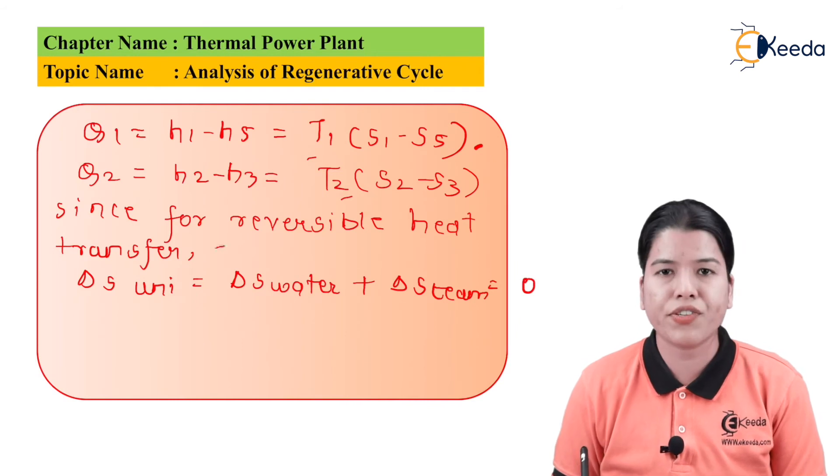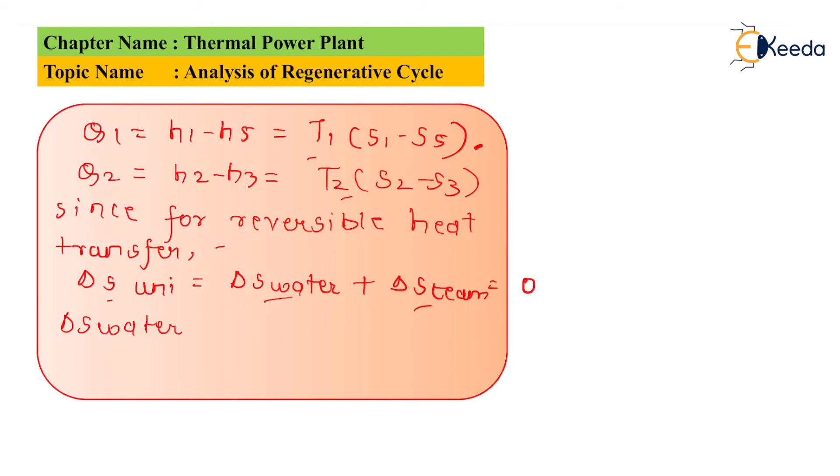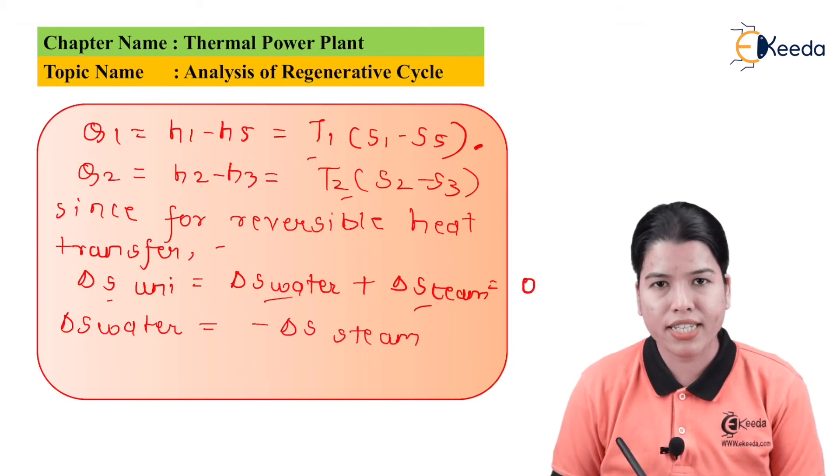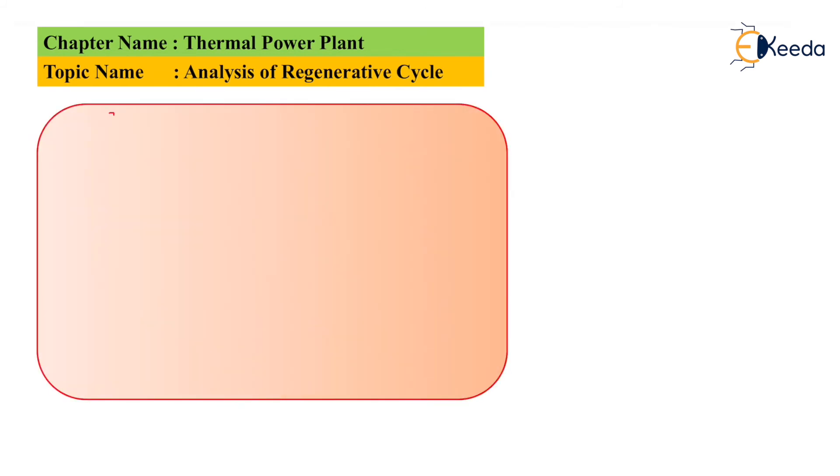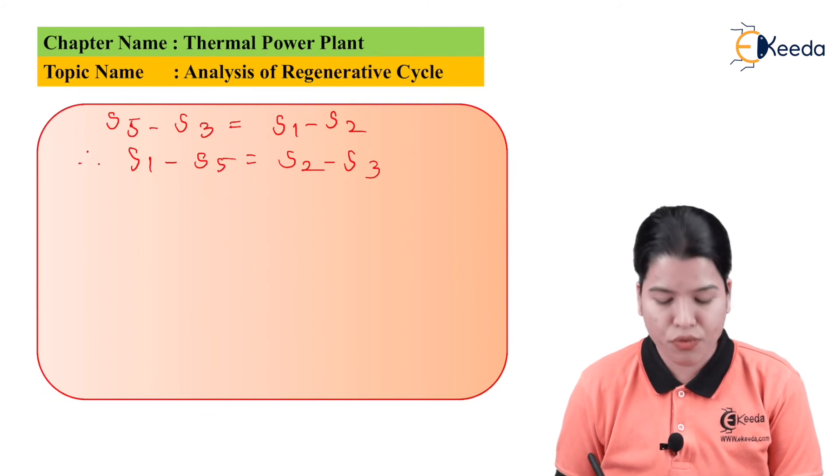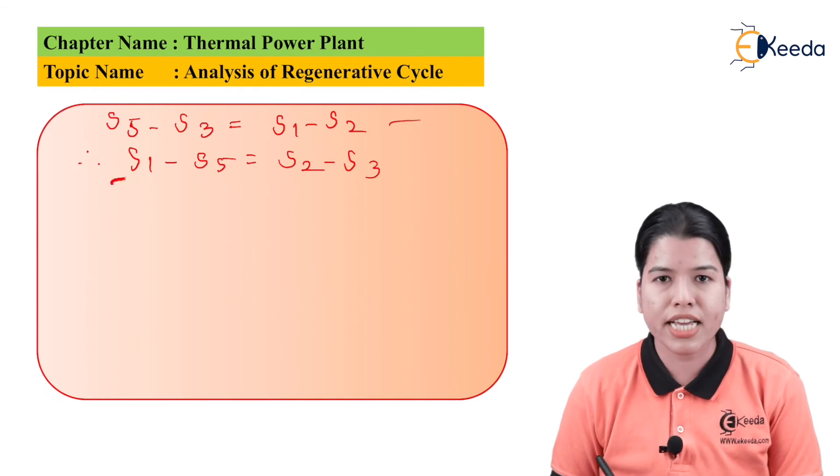Since the reversible heat transfer, we can write delta S_universe equals delta S_water plus delta S_steam equals 0. Therefore, delta S_water equals minus delta S_steam. This can also be written as S5 minus S3 equals S1 minus S2, which can be rearranged as S1 minus S5 equals S2 minus S3.